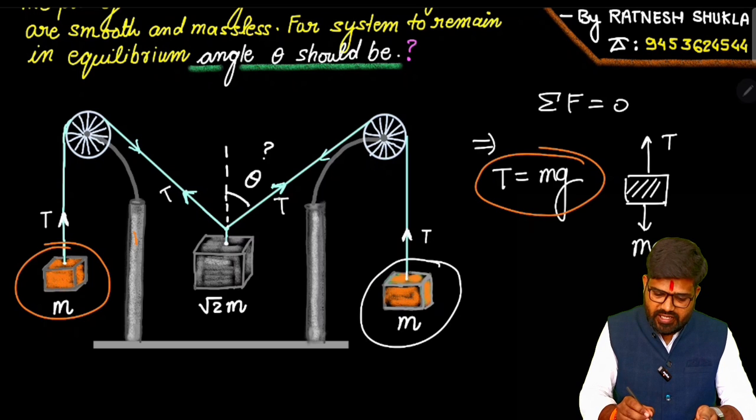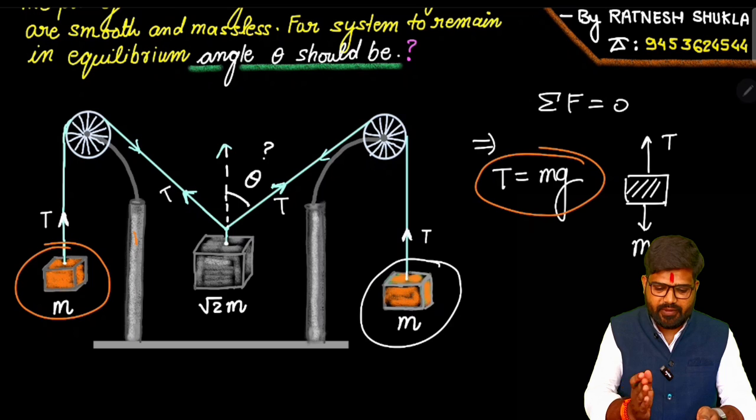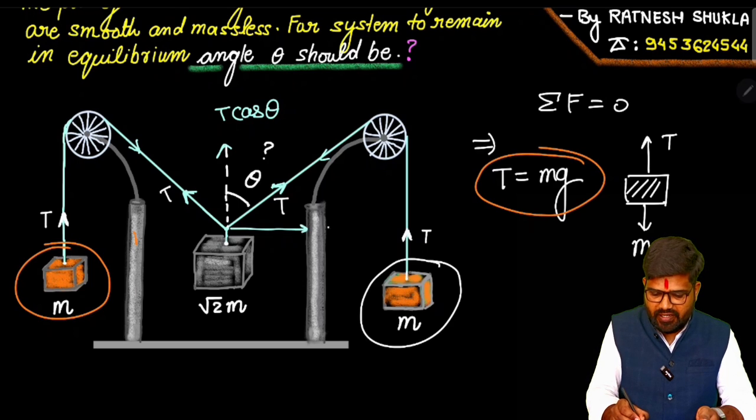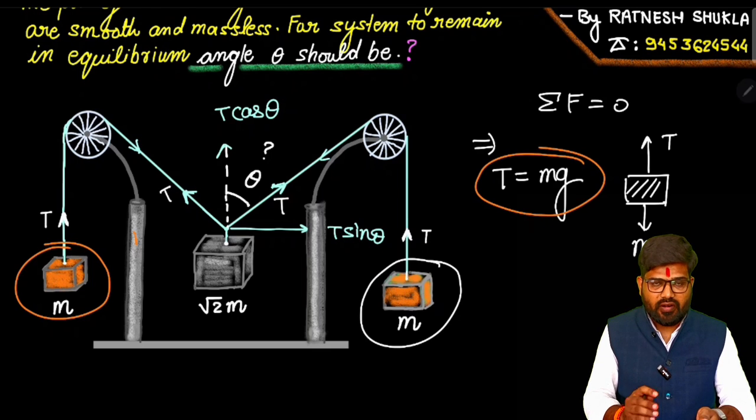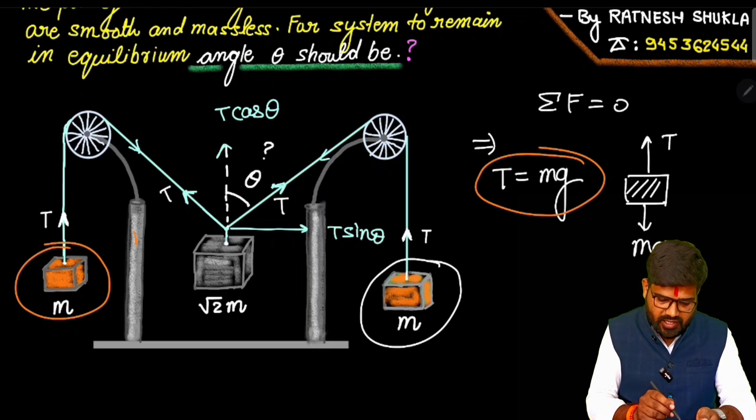Now we'll write this tension in component form. One part will be vertical up which makes angle theta with vertical direction. So vertically this part will be T cos theta. And horizontal part will be T sin theta. Now since the block is not moving right or left, it means necessarily there must be such a force on left side which is canceling it out.